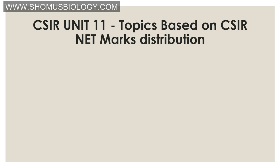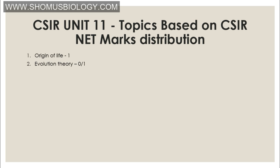Unit 11 is all about Evolutionary Biology. The most important topics are: Origin of Life (1 question), particularly the Urey-Miller Experiment and the Haldane Soup model of the origin of life. Evolutionary Theory (0-1 question) covers Lamarckism, Darwinism, and the pace of evolution such as Punctuated Equilibrium and Gradualism.